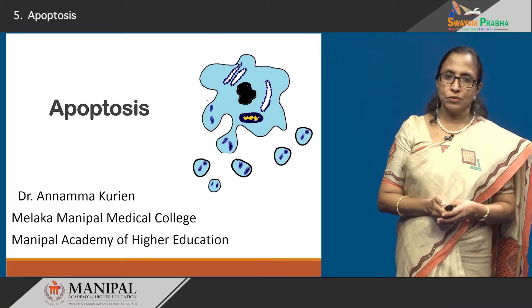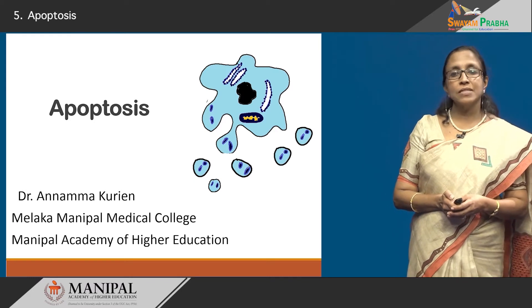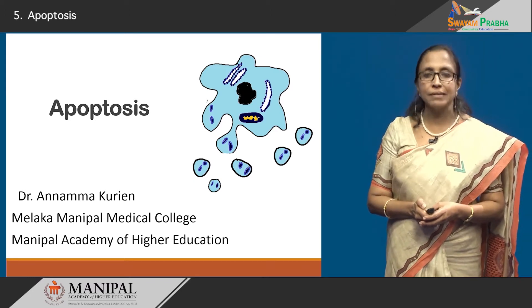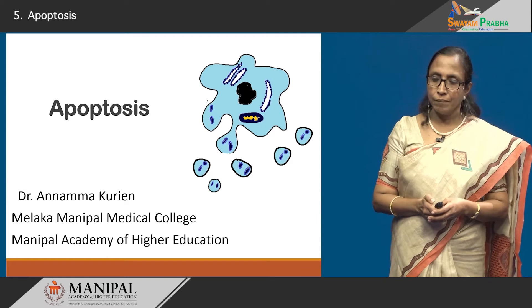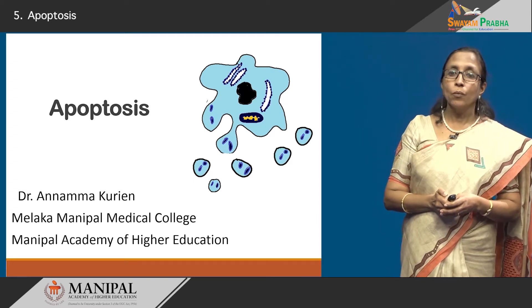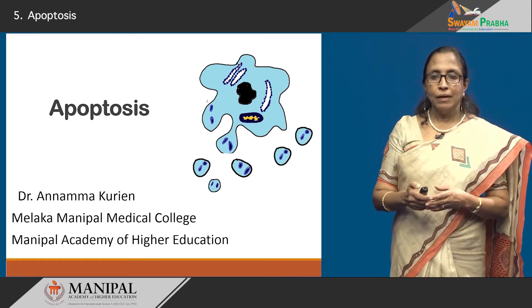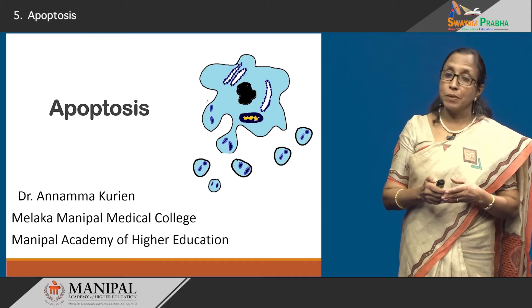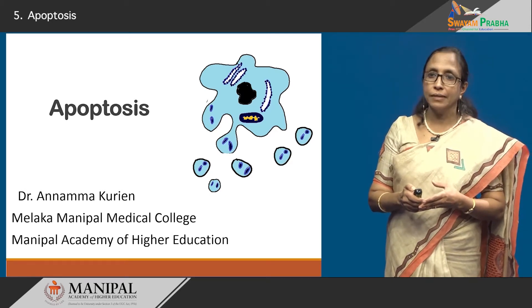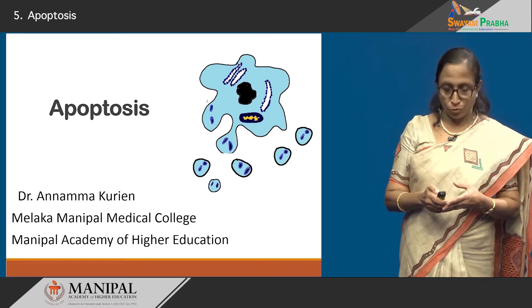Hello dear students. 50 to 70 billion cells are dying and getting replaced every day. This process whereby the cells are dying is many times a special type of cell death, and we call it apoptosis.